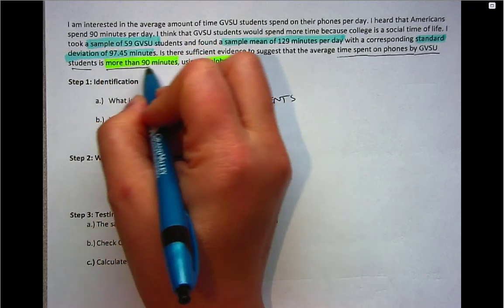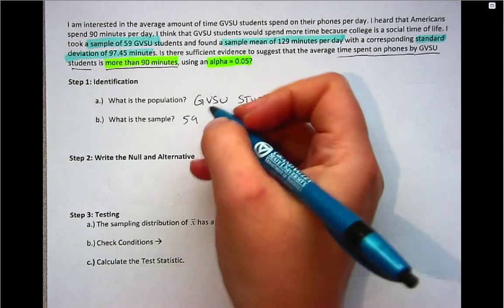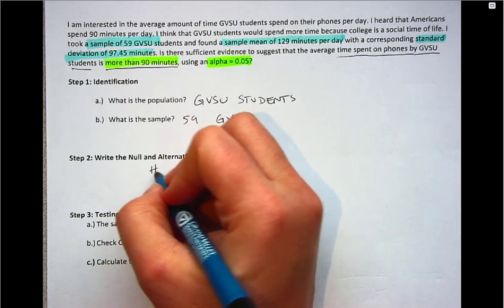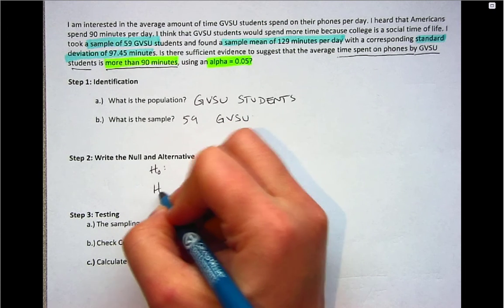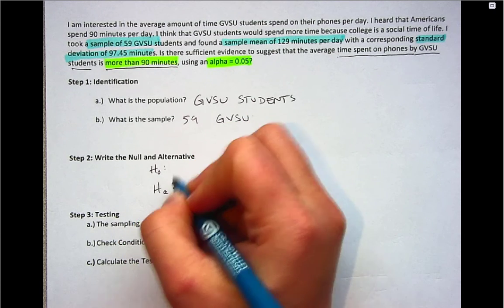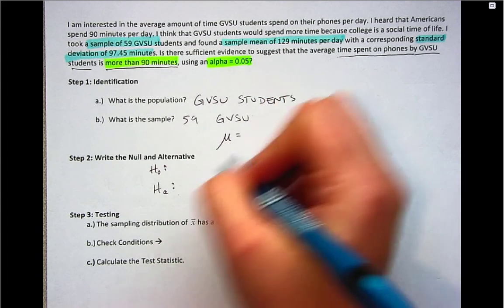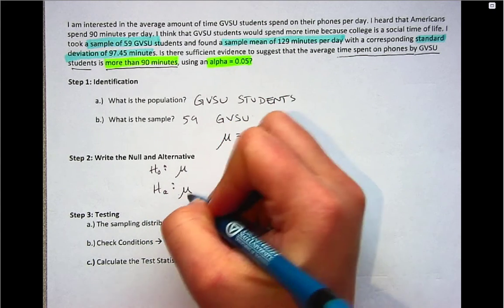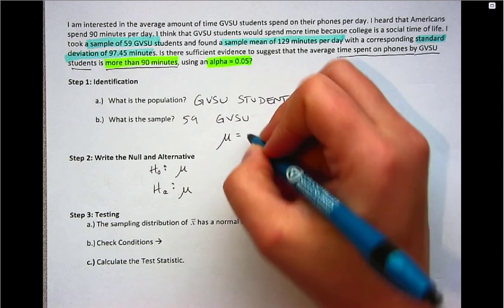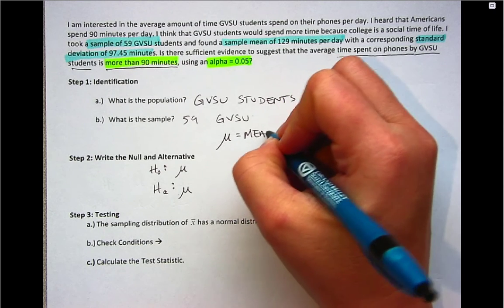So this more than 90 minutes is what we're going to use in the alternative. So here we're going to have a mu. And let's define that mu in step one as being mu equals mean, because mu is the population mean.